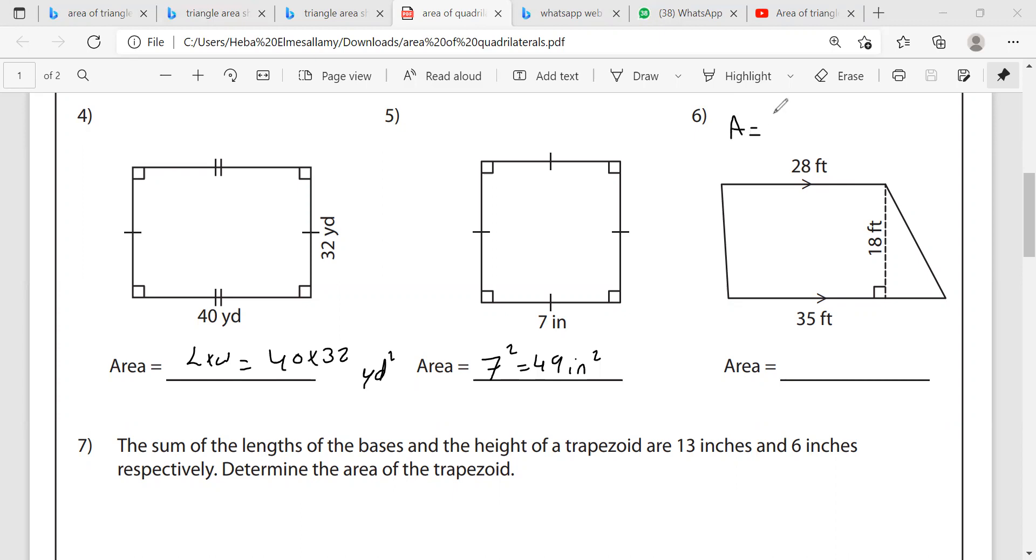So I have to get the mean of the two bases and then I will multiply what I got by the height. Area equals base one plus base two divided by two. This is how I can get the mean of the two bases and then I will multiply this by the height.